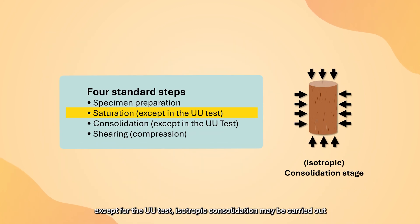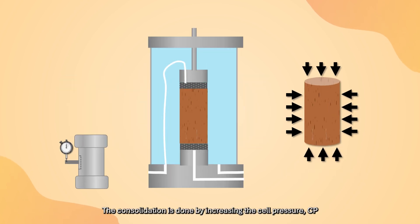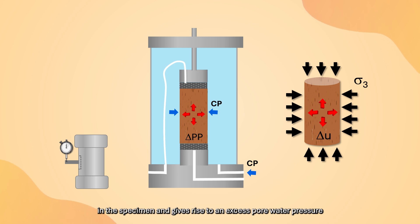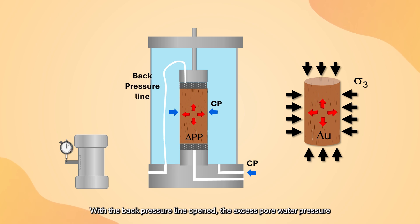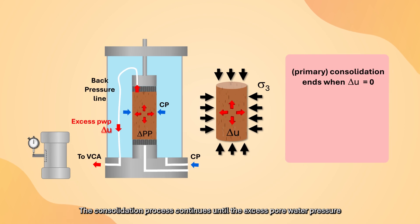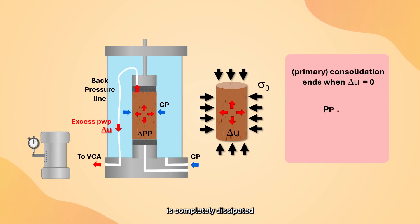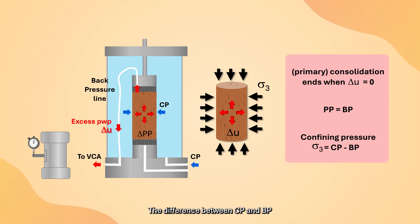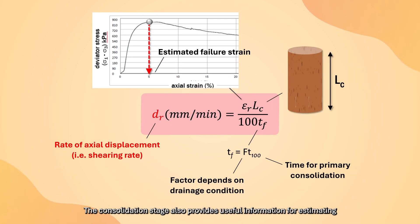Once the soil has been saturated, except for the UU test, isotropic consolidation may be carried out. The consolidation is done by increasing the cell pressure CP; this increase in external load is taken up by water in the specimen and gives rise to an excess pore water pressure. With the back pressure line open, the excess pore water pressure gradually dissipates through the drainage line until completely dissipated, at which point the pore water pressure reverts back to the back pressure. The difference between CP and BP is referred to as the confining pressure. The consolidation stage also provides useful information for estimating the rate of axial displacement required in the subsequent shearing stage.